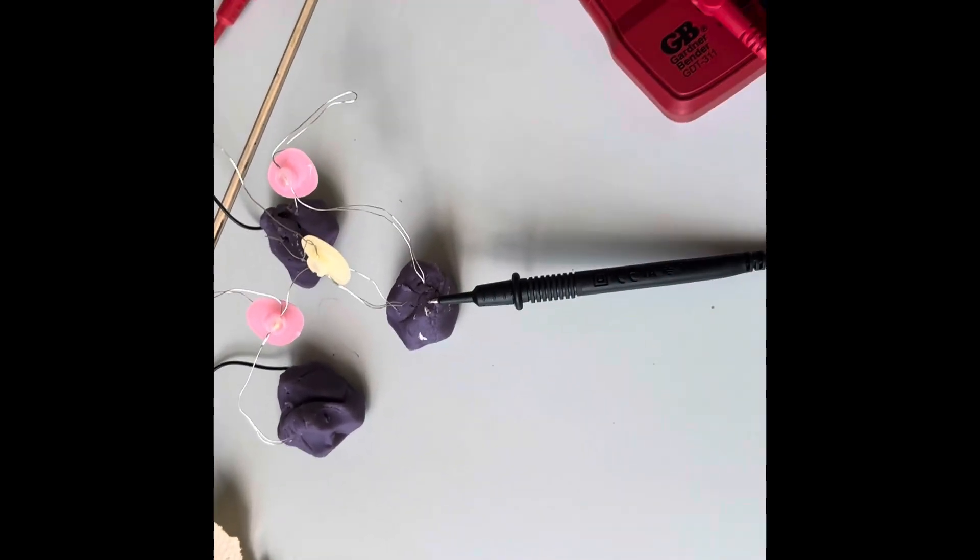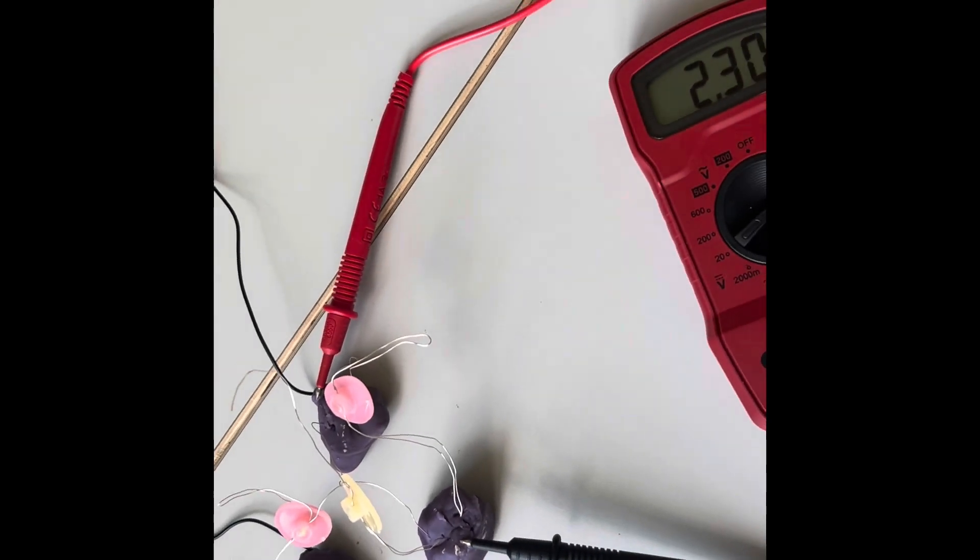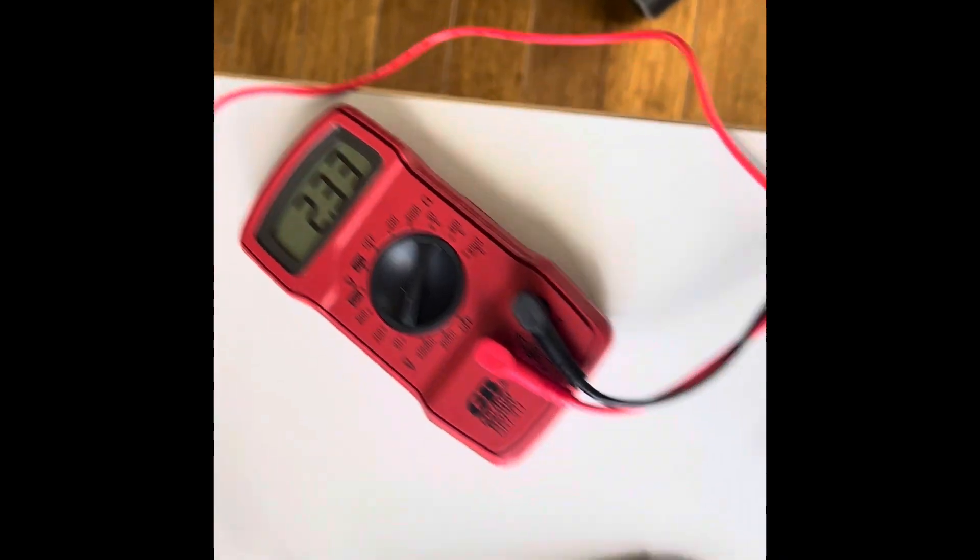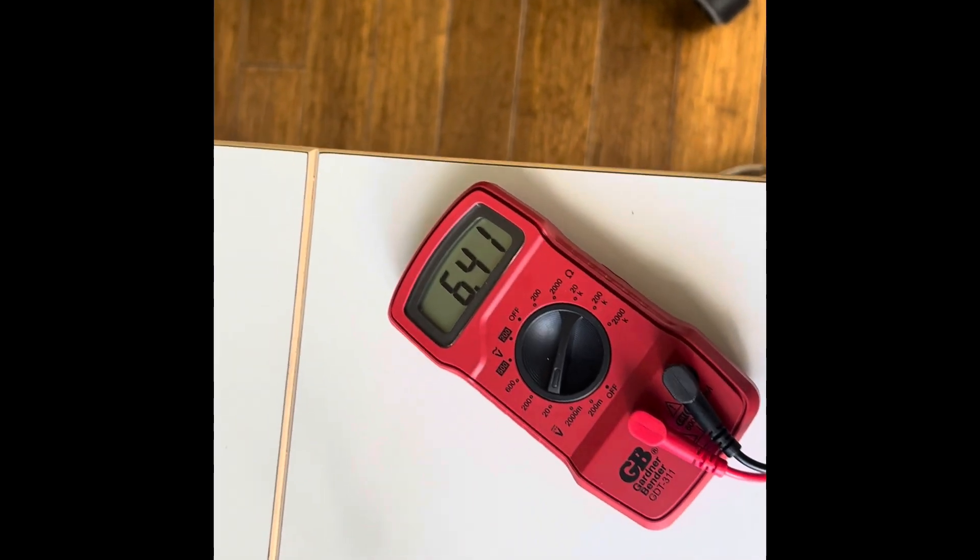Now we want to check the voltage. Going from the two lights it is 2.3, and then the one light is 6.4.